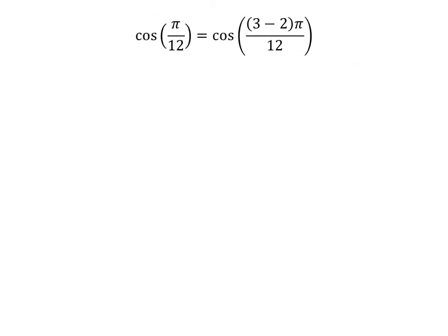We know 3 minus 2 is equal to 1. So cosine of pi upon 12 is equal to cosine of 3 minus 2 times pi upon 12. Expanding the numerator, we get cosine of 3 times pi minus 2 times pi upon 12.